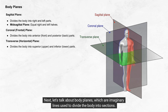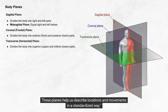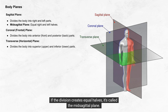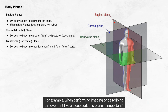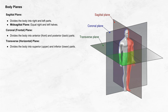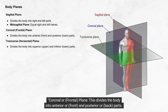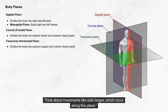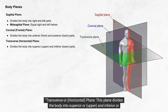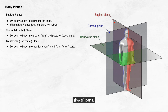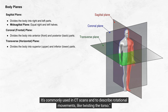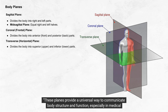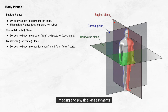Next, let's talk about body planes, which are imaginary lines used to divide the body into sections, helping us describe locations and movements in a standardised way. The sagittal plane divides the body into right and left parts; if the division creates equal halves, it's called the mid-sagittal plane. The coronal or frontal plane divides the body into anterior and posterior parts — think of movements like side lunges. The transverse or horizontal plane divides the body into superior and inferior parts, commonly used in CT scans and to describe rotational movements like twisting the torso. These planes provide a universal way to communicate body structure and function, especially in medical imaging and physical assessments.